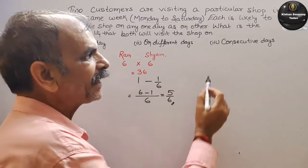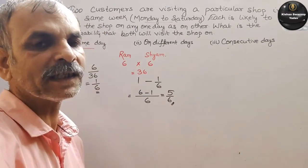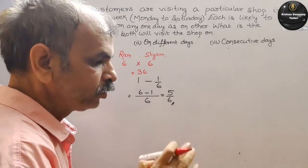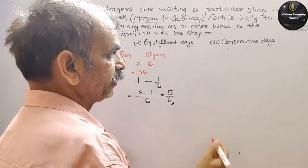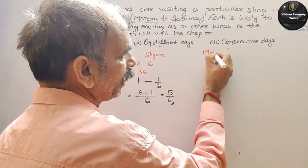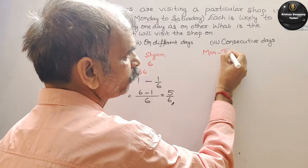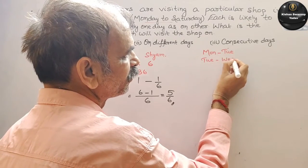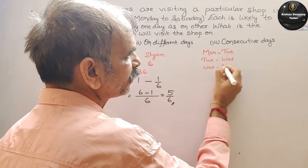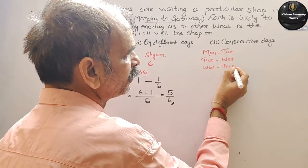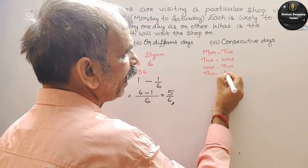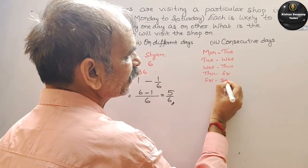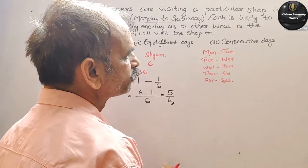अब इसमें बोला है consecutive days — एक के बाद एक, one by one. तो consecutive day pairs हैं: Monday-Tuesday, Tuesday-Wednesday, Wednesday-Thursday, Thursday-Friday, Friday-Saturday.